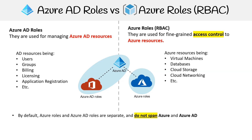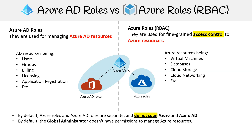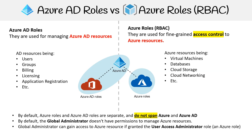By default, Azure Roles and Azure AD Roles are separate and do not span Azure and Azure AD. By default, the global administrator doesn't have permissions to manage Azure resources. The global administrator can gain access to Azure resources if granted the user access administrator role. Azure AD Roles are specifically for managing Azure AD resources while Azure Roles focus on access control to Azure resources.